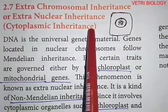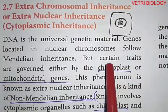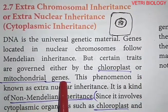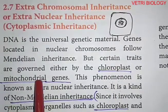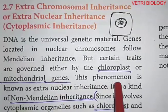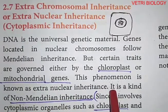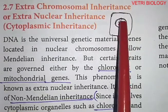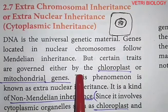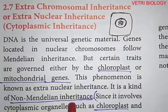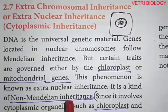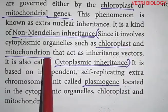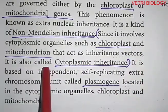Cytoplasmic inheritance means certain traits are governed either by chloroplast or mitochondrial genes. This phenomenon is known as extra nuclear inheritance. It is a kind of non-Mendelian inheritance — they do not follow Mendelian inheritance. Since it involves cytoplasmic organelles such as chloroplasts and mitochondria that act as inheritance vectors, it is also called cytoplasmic inheritance.